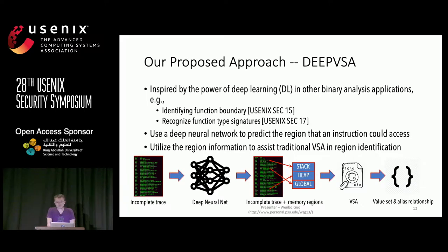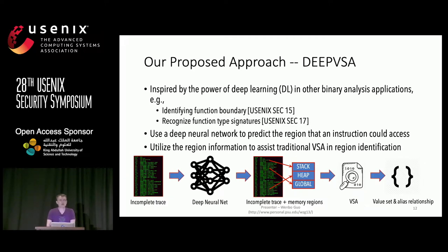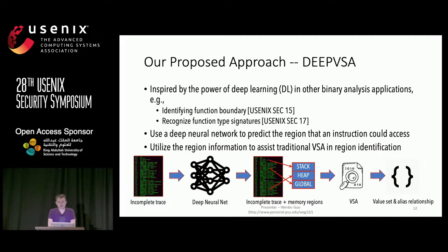Over the past few years, there are many techniques that use deep learning to perform binary analysis. They basically use similar architecture: the network takes machine code directly as input and outputs the prediction accordingly. However, this network structure cannot achieve very high accuracy because it misses the instruction information within the execution sequence. Inspired by this work, we propose to use a hierarchical recurrent network for predicting the memory region tied to each instruction in our execution trace.